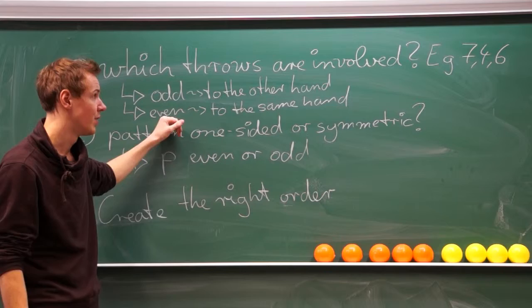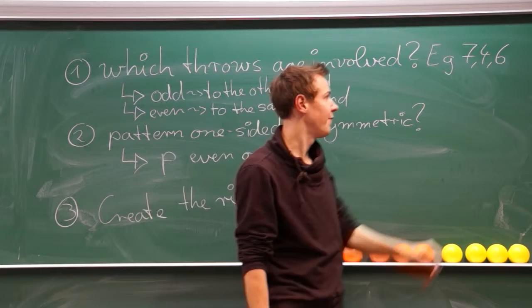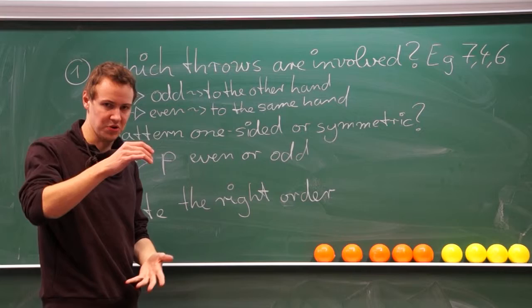And you have to choose the right number also. If you have a really high throw, it might be a seven or a five. If it's more in this kind of area, it might be three, depending on the rhythm.